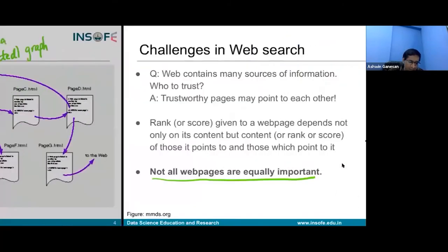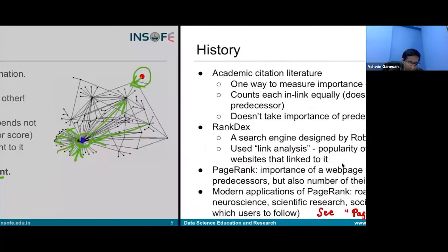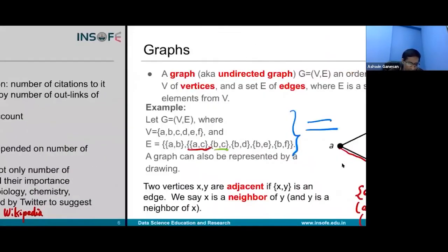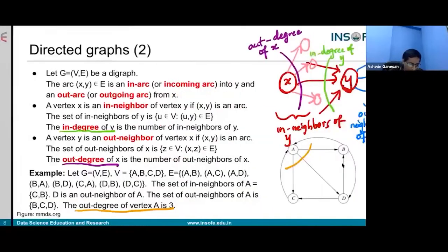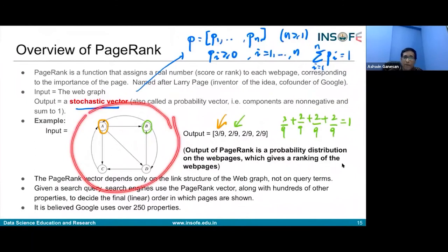This is the web graph. Here's an example of a web graph on four nodes: you have A pointing to B, B pointing to D, and so on. So you have four web pages in this simple example.